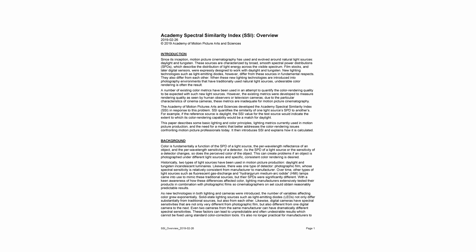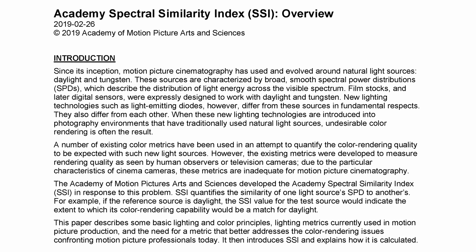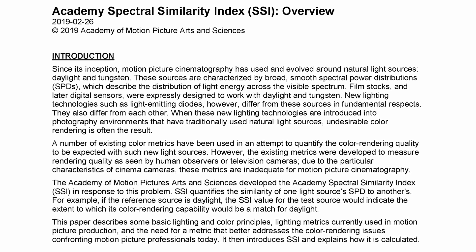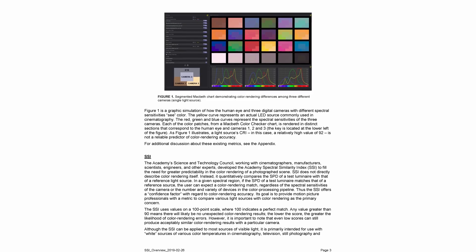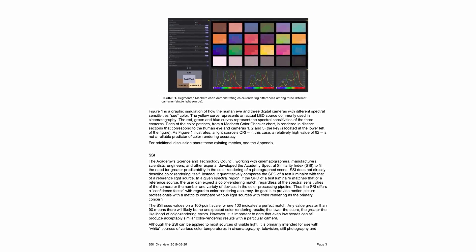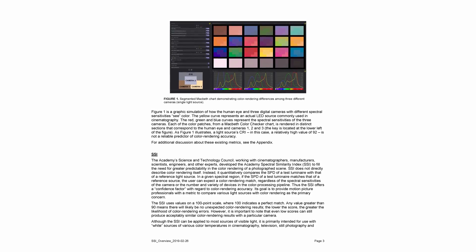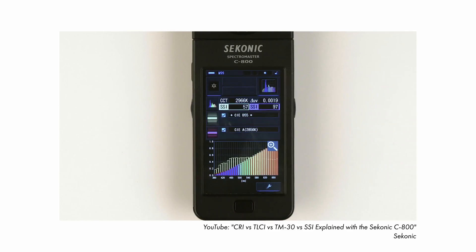Enter SSI, which stands for spectral similarity index. The standard was developed by the academy to overcome some of these challenges, so it's not based on human vision or a particular camera, but rather the spectral fingerprint of an actual source. This is super important to note — SSI is just concerned with how similar a light is to another. The higher the score, the closer the spectral power distribution, with 100 being an exact match.